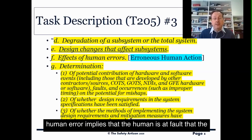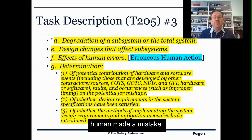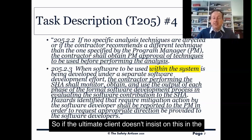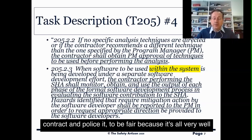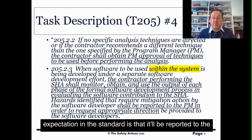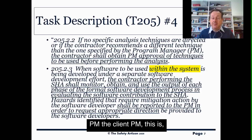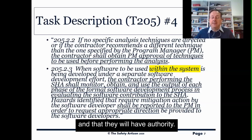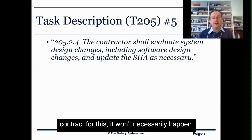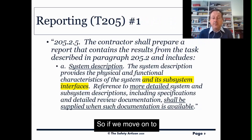Human error implies that the human is at fault — that the human made a mistake. If you don't ask for it, you're not going to get it. So if the ultimate client doesn't insist on this in the contract and police it — because it's all very well asking for things — if anything requires mitigation, the expectation in the standard is that it'll be reported to the client PM. And if the client doesn't contract for this, it won't necessarily happen.